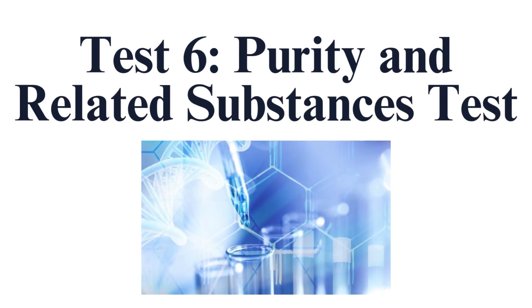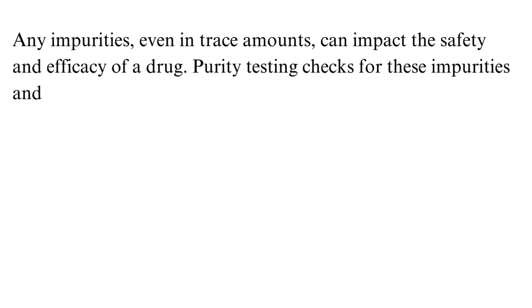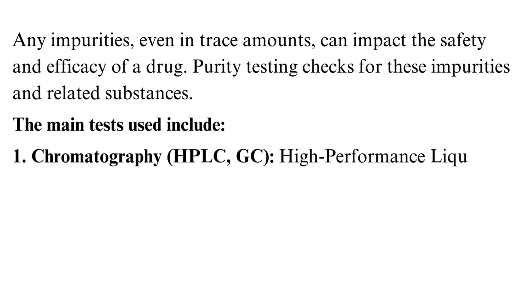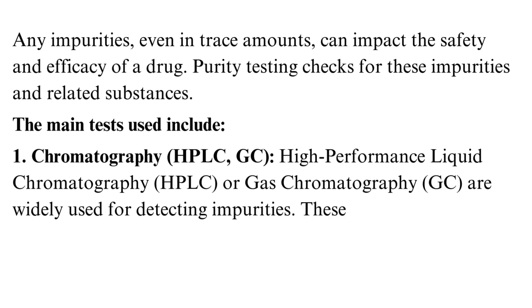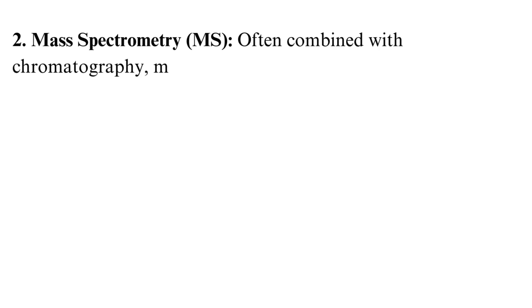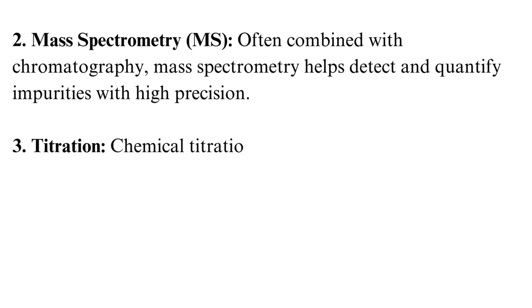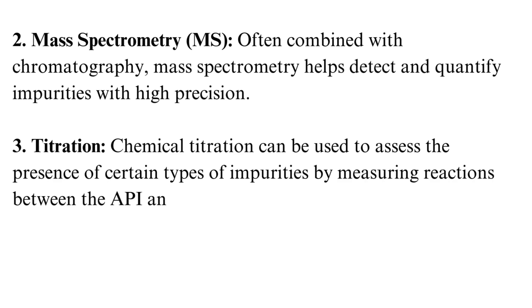Test 6: Purity and Related Substances Test. Any impurities, even in trace amounts, can impact the safety and efficacy of a drug. Purity testing checks for these impurities and related substances. Main tests include: chromatography — HPLC or gas chromatography are widely used for detecting, separating, and quantifying impurities and degradation products; mass spectrometry, often combined with chromatography, helps detect and quantify impurities with high precision; and chemical titration, which can assess the presence of certain types of impurities by measuring reactions between the API and chemical reagents.